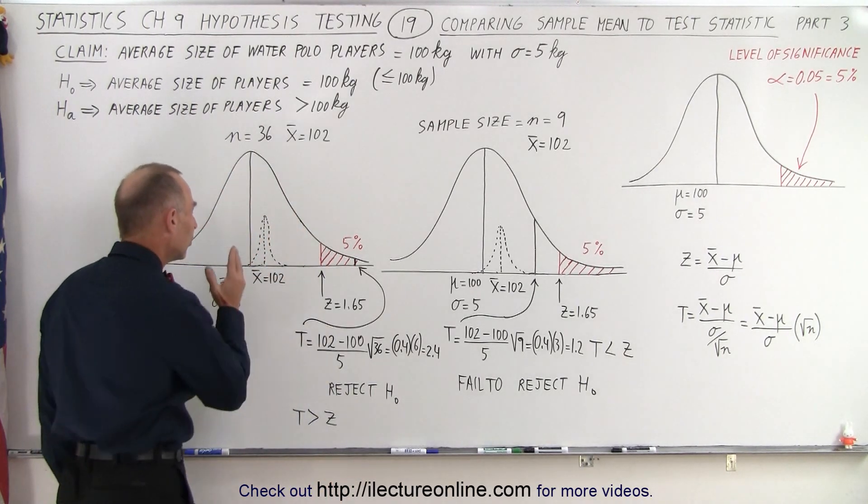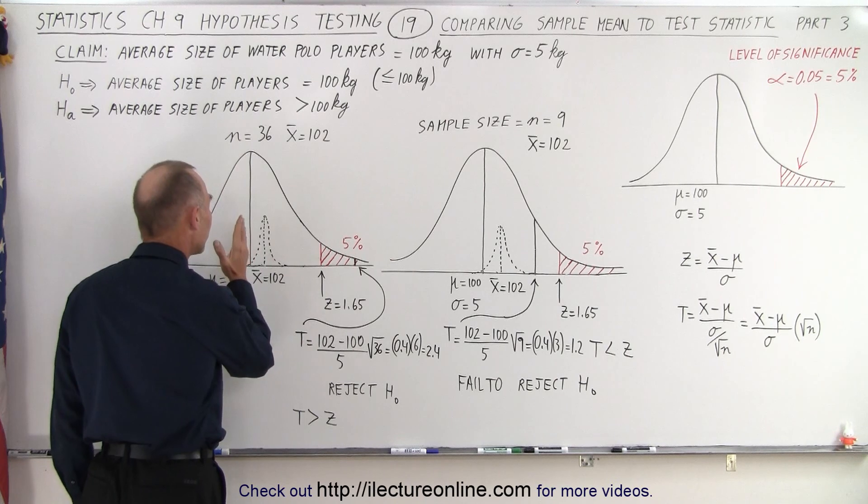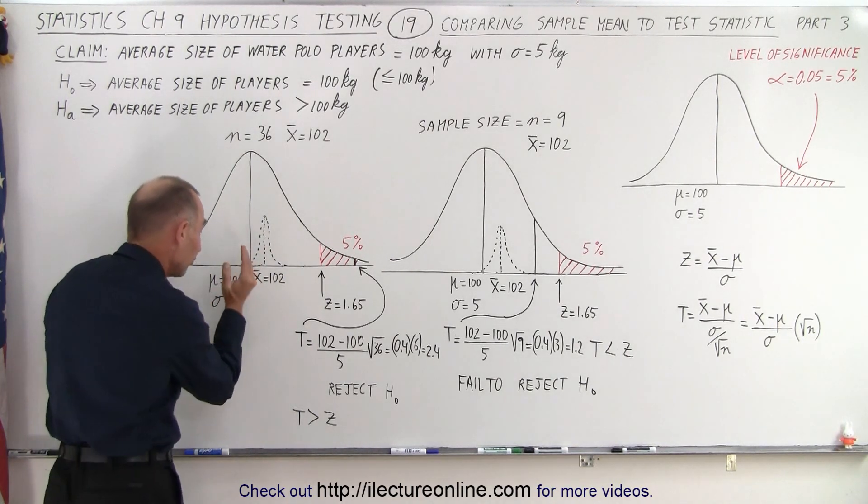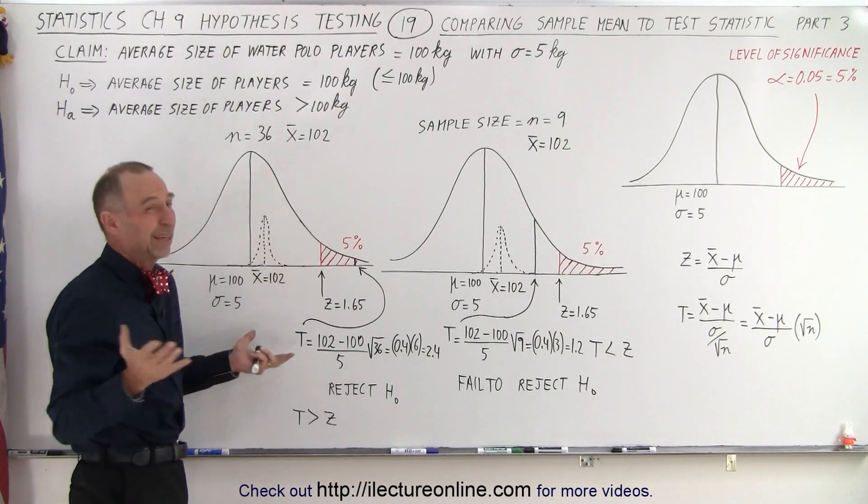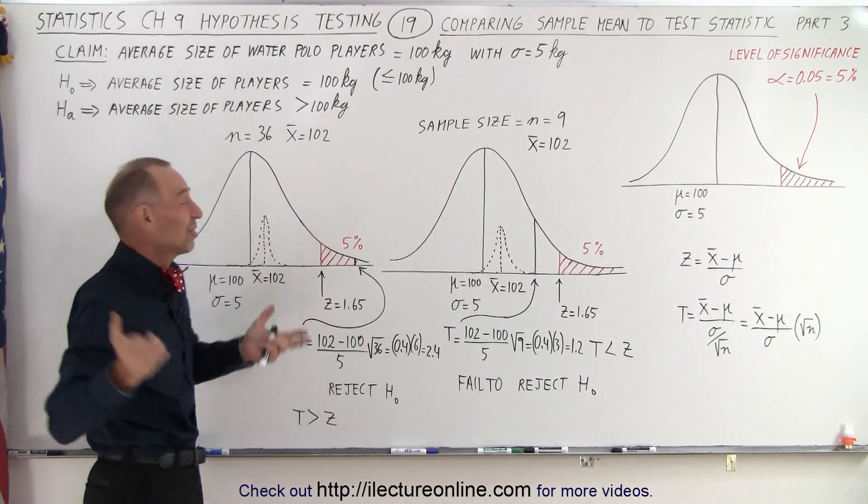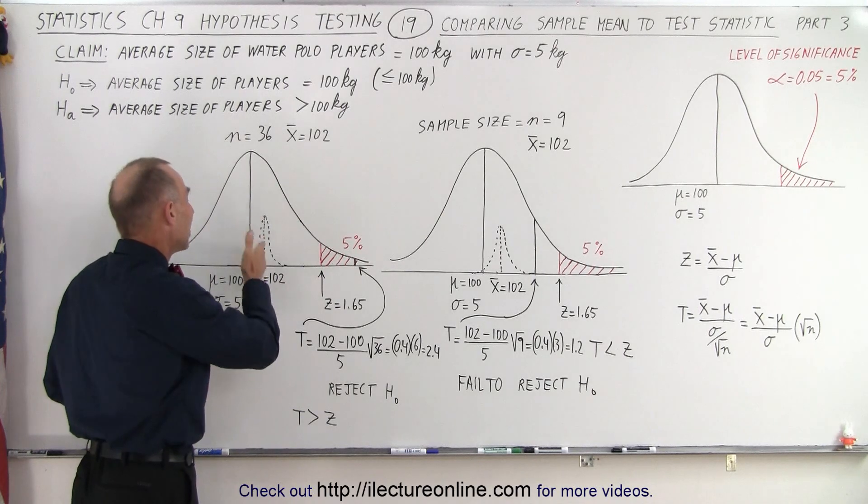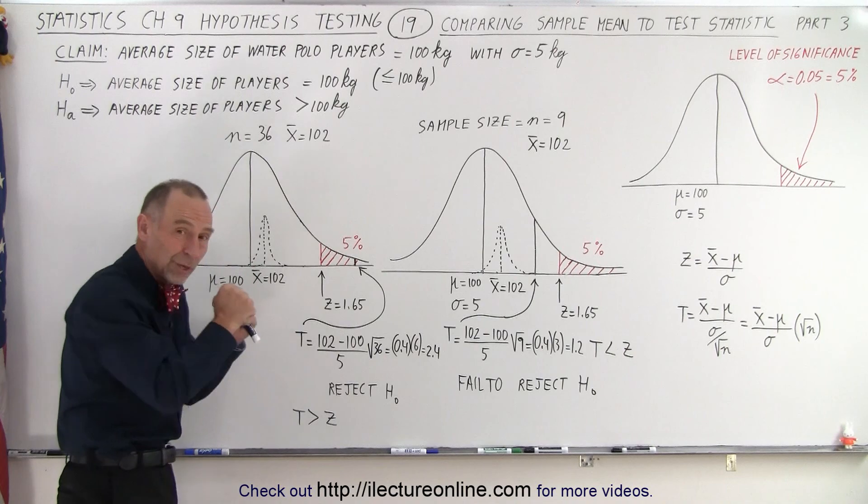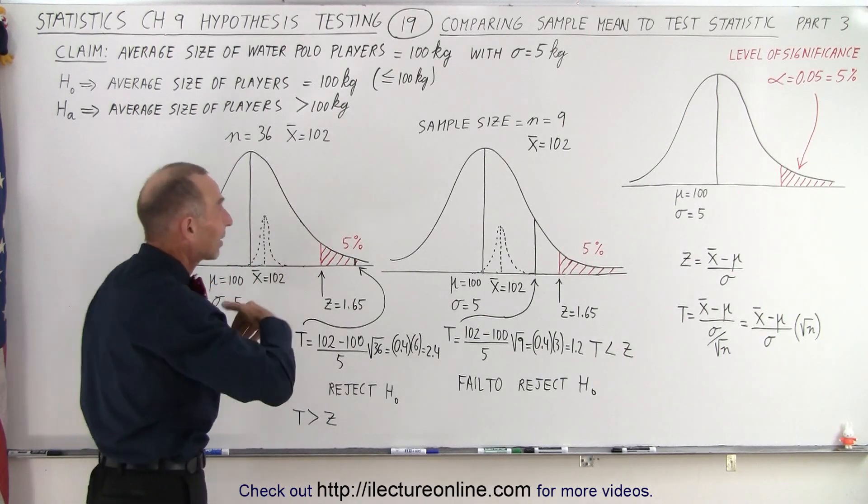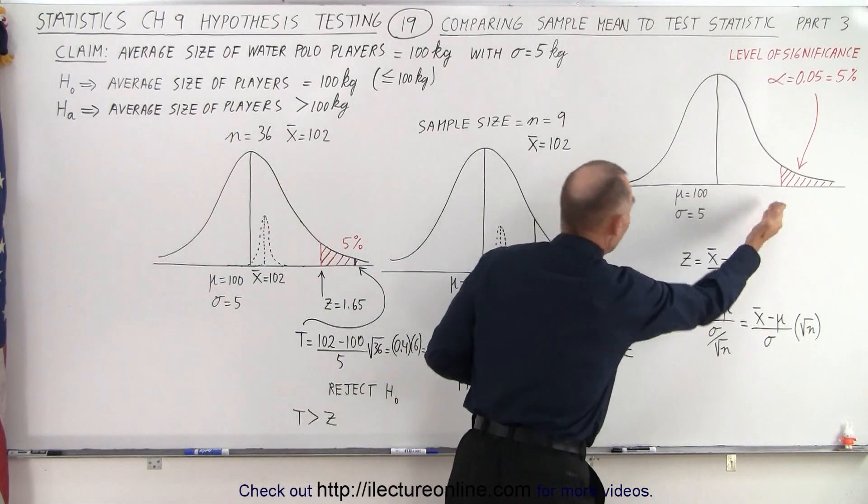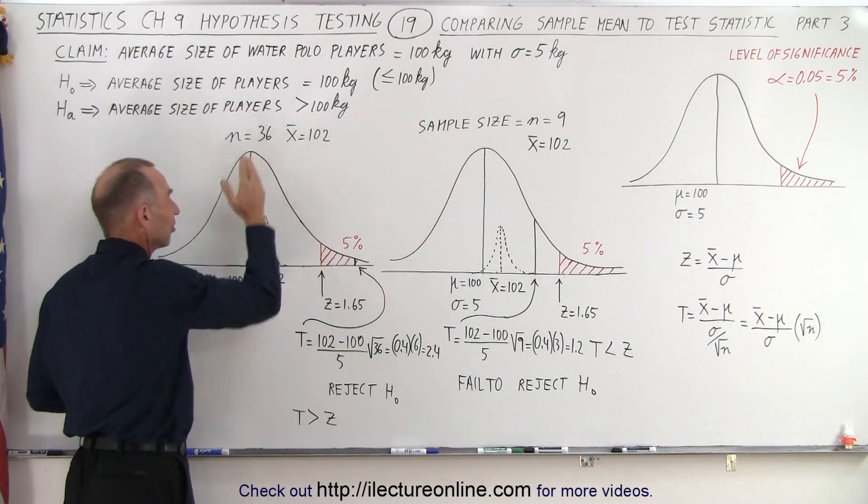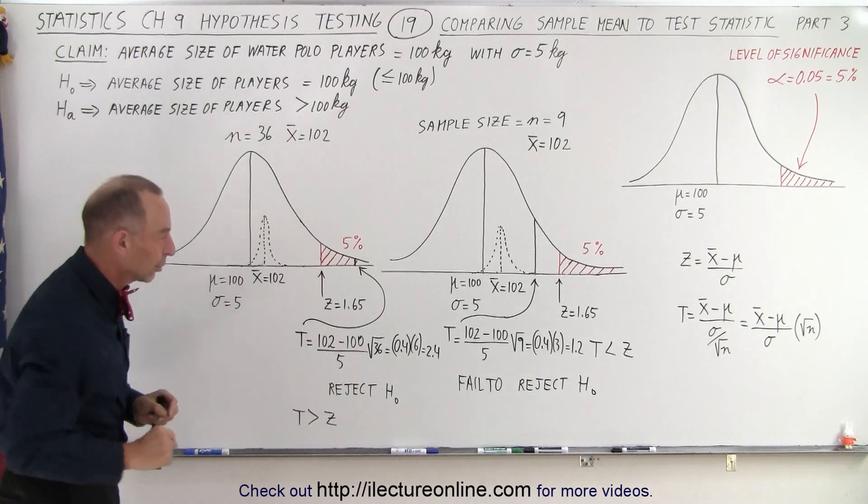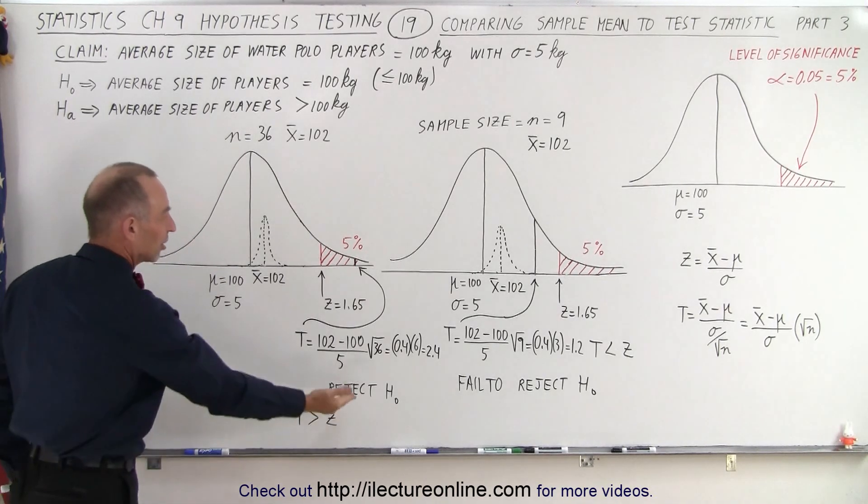So even though the difference in the mean between the population and the sample is relatively small, it's only 2 from 100 to 102, you would think that's so close, can you really reject the null hypothesis? But it was based on a sample size of 36, which means that that difference of 2 was really significant, and at the level of significance of 5%, it was enough with a sample of 36 to push the test statistic into the critical region, and therefore we rejected the null hypothesis.